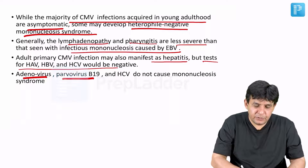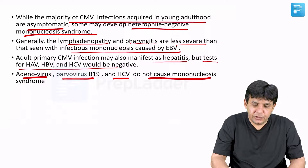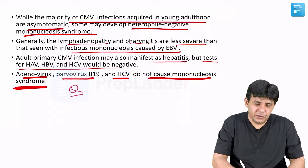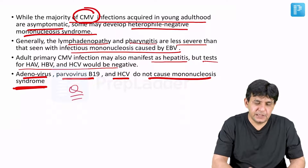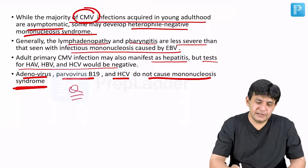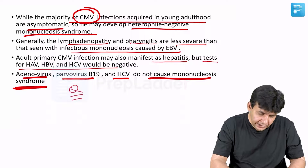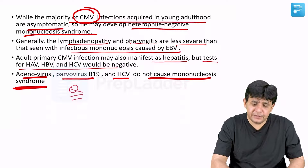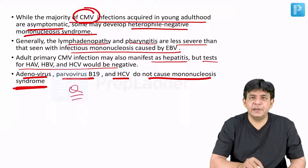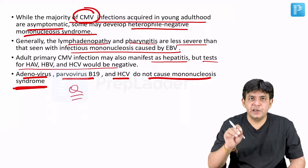Adenovirus, parvovirus B19, and HCV do not cause mononucleosis-like syndrome. So in mononucleosis-like syndrome, the major organism involved is CMV. It is different from Epstein-Barr virus in that the lymphadenopathy and pharyngitis are less severe compared to the infectious mononucleosis features.